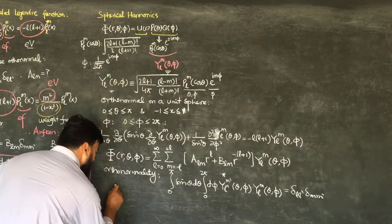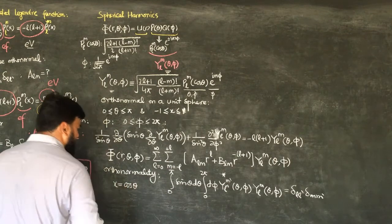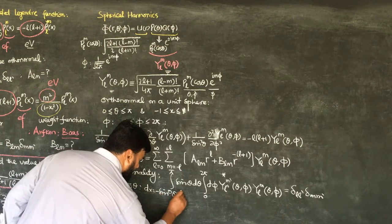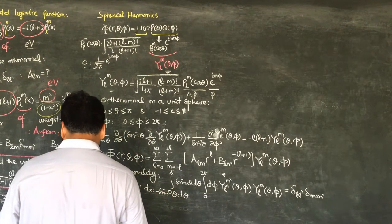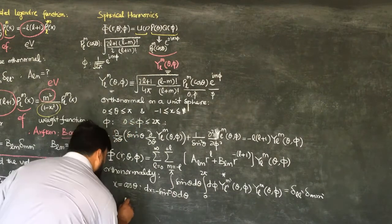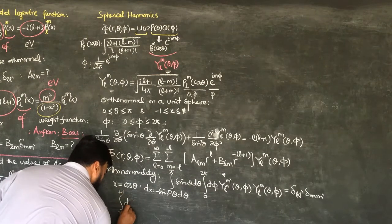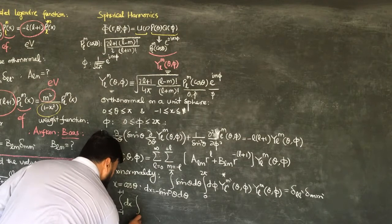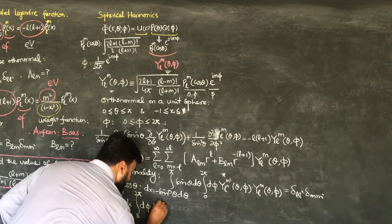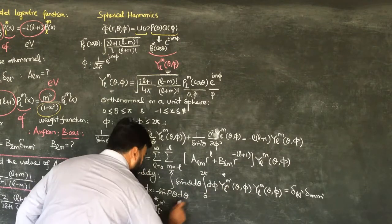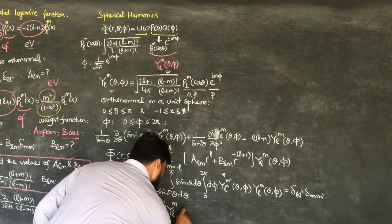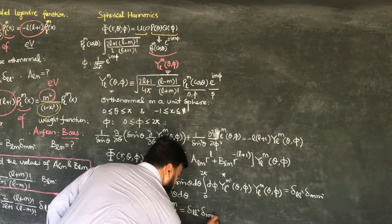We can also write this in terms of x, where for a unit sphere x equals cos theta and dx equals minus sin theta d theta. So the orthonormality condition becomes: the integral from −1 to +1 of dx times the integral from 0 to 2π of dφ, of Y*_{L'M'}(x, phi) times Y_{LM}(x, phi), equals delta_{LL'} times delta_{MM'}.